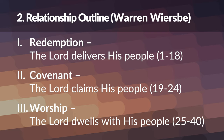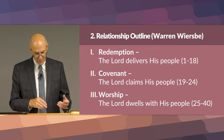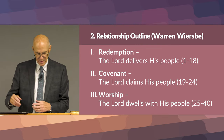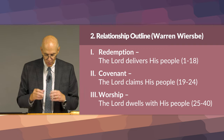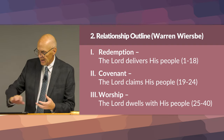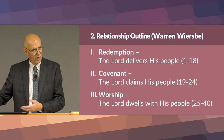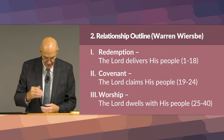Another type of outline is the relationship outline, from Warren Wiersbe. He has three parts. Part one, redemption — the Lord delivers his people, chapters one to 18. Part two, the covenant — the Lord claims his people, chapters 19 to 24. And the third part, worship — the Lord dwells with his people. The covenant is given, the tabernacle is built — this is where God will dwell with his people. So that's the relationship outline: redemption, covenant, and worship.